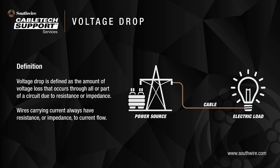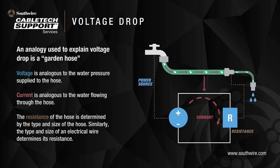Cables or wires carrying electrical current always have resistance or impedance to the current flow. An analogy used to understand the voltage drop is a garden hose. Voltage is analogous to the water pressure supply to the hose, and current is analogous to the water flowing through the hose. The resistance of the hose is determined by its type and size, similar to the type and size of the electrical wire determining its resistance.